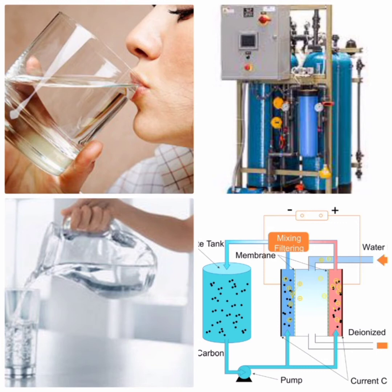Ordinary water contains many ions such as copper 2+, calcium 2+, magnesium 2+, and hydrogen carbonate ions. It is also important to know that these ions are most commonly removed using an ion exchange process, reverse osmosis, and electrodeionization.